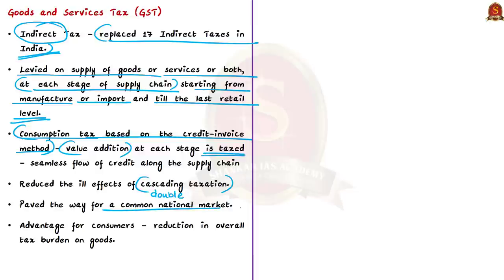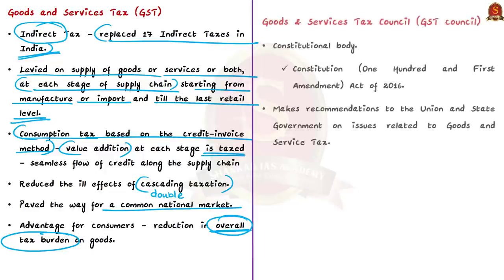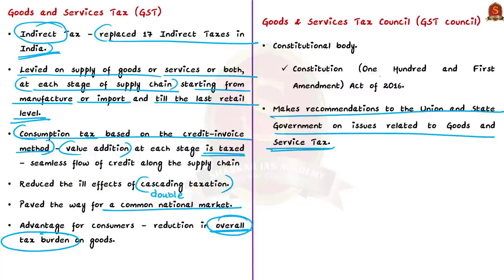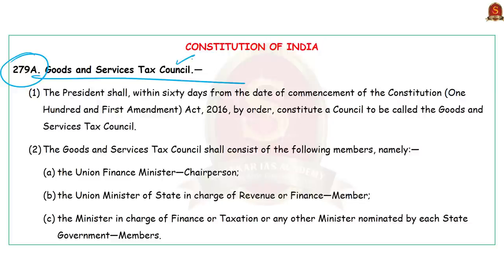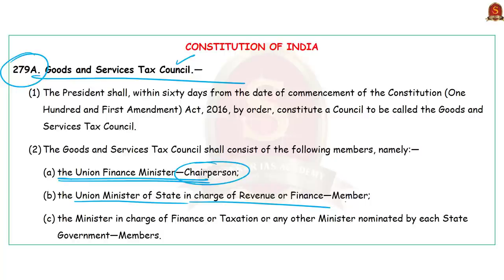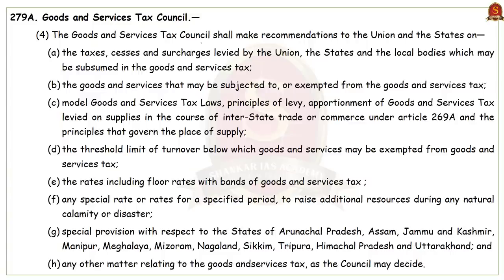The biggest advantage for consumers is a reduction in overall tax burden — around 25 to 30 percent was reduced as a result of GST. Recommendations to the union and state governments on GST-related issues are provided by the Goods and Services Tax Council. The GST Council is a constitutional body introduced by the Constitution 101st Amendment Act of 2016, which made constitutional provision for it under Article 279A of the Indian Constitution. As per Article 279A clause 2, the council is chaired by the Union Finance Minister, and its members include the Union State Minister of Revenue or Finance and ministers in charge of finance or taxation of all the states.